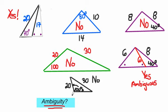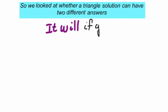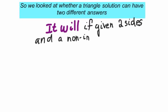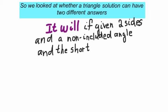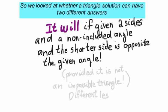This is what we did — this is when you will have two different ambiguous answers. If you have two sides and a non-included angle, and the shorter side is across from the given angle, then you're a candidate for having an ambiguous triangle, assuming the triangle exists. There are triangles you can state that don't exist, but we'll talk about that later.